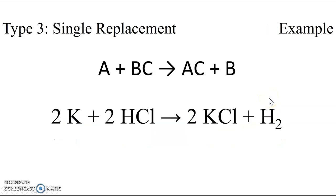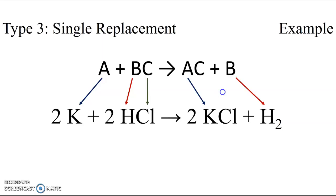An example of this is the reaction between potassium and hydrogen monochloride to form potassium chloride and hydrogen gas. Here potassium is the reactant element and hydrogen and chlorine together make up the reactant compound. On the product side, potassium is now part of the compound and hydrogen is by itself as an element. So potassium replaced hydrogen as part of the compound with chlorine.